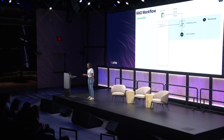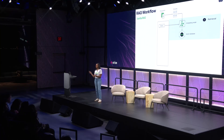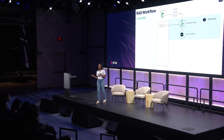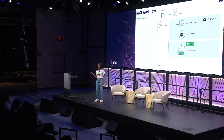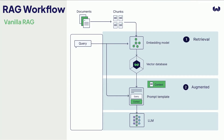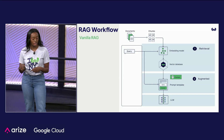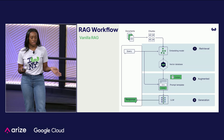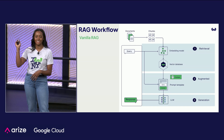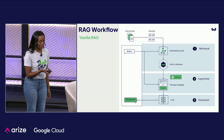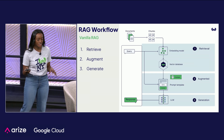Let's start with vanilla RAG versus agentic RAG. Here we have our typical vanilla RAG workflow. We have our vector index storing the chunks of your document in your vector database. When a user has a query, it goes to the embedding model and we do a semantic search — comparing the user query embedding to the embeddings in our vector index. We then augment it by taking the relevant context along with the prompt and sending it to the language model, which outputs a response to the user. In summary: retrieve, augment, and generate — a very standard pipeline.